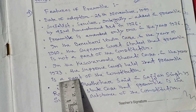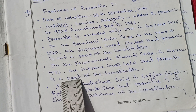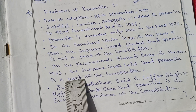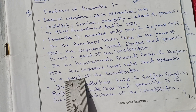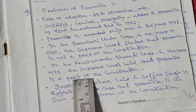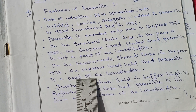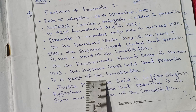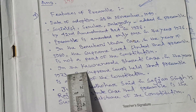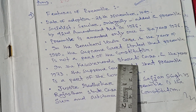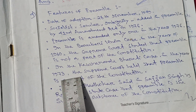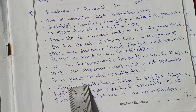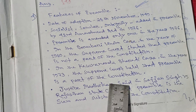Thereafter, in which case and year was it pronounced that the Preamble is a part of the Constitution? The answer is: in the Kesavananda Bharati case in the year 1973, the Supreme Court held that the Preamble is a part of the Constitution.